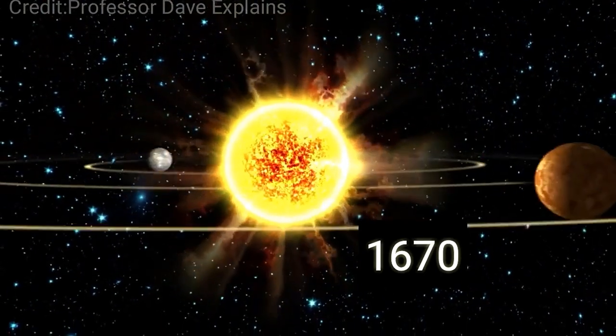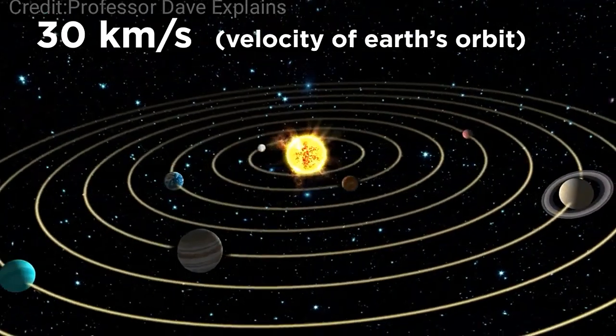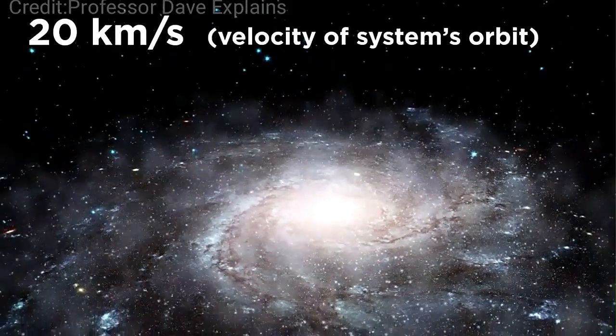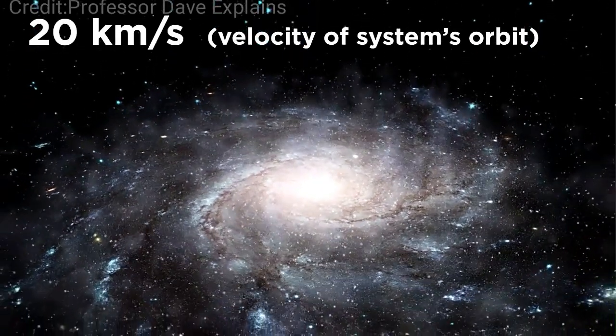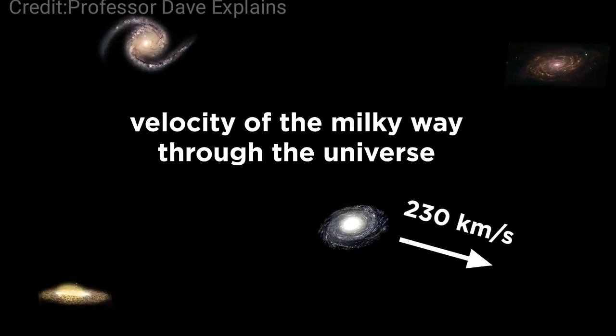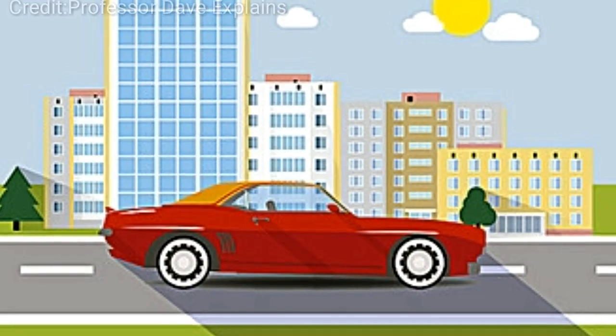And also the velocity of Earth's orbit around the sun is about 30 kilometer per second, and the sun along with the solar system is moving around in the Milky Way at a speed of 20 kilometer per second, and the Milky Way galaxy is moving towards the Andromeda galaxy in the universe at a speed of 230 kilometer per second.